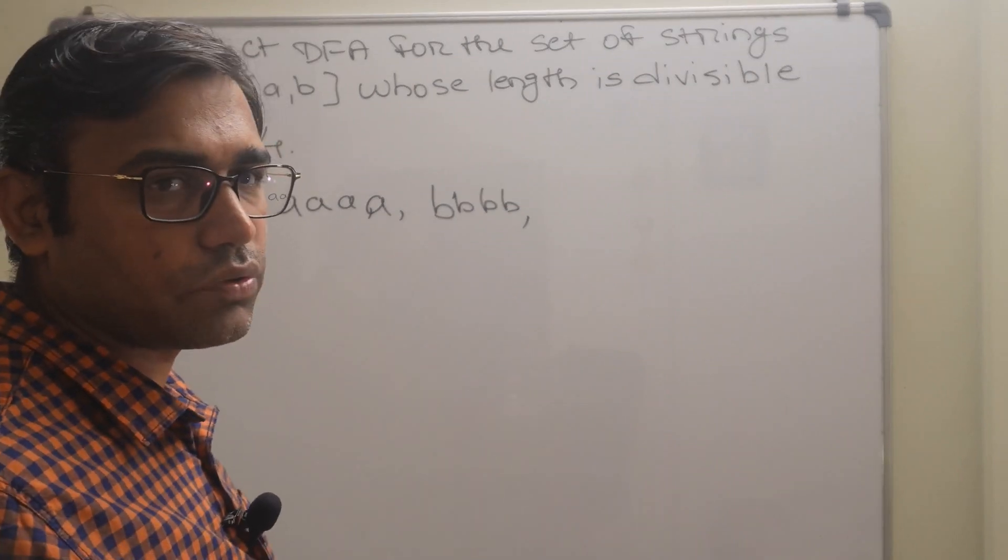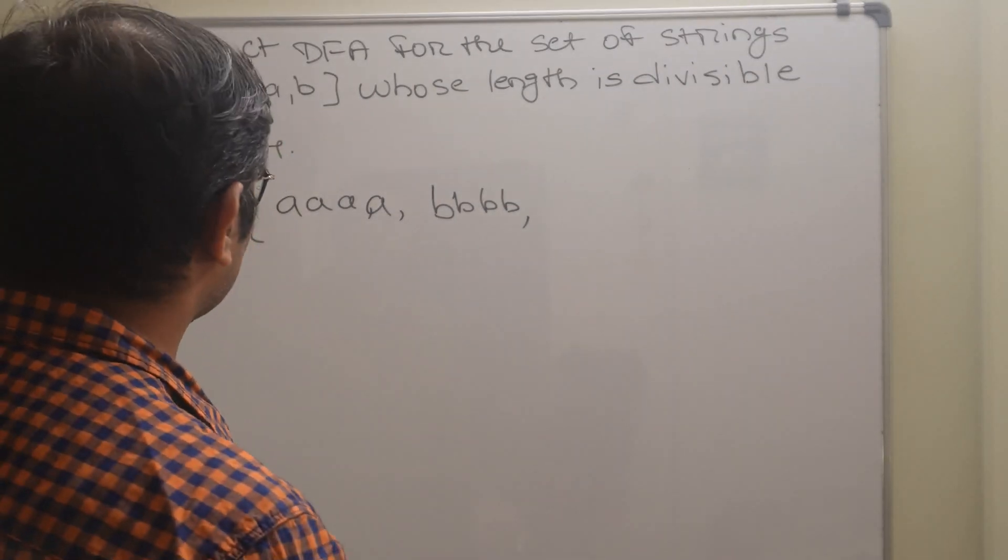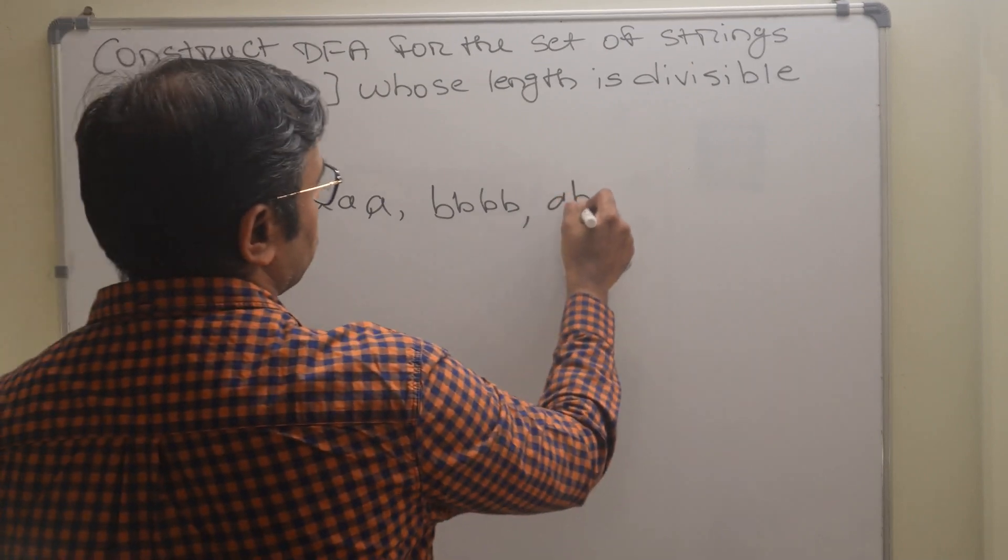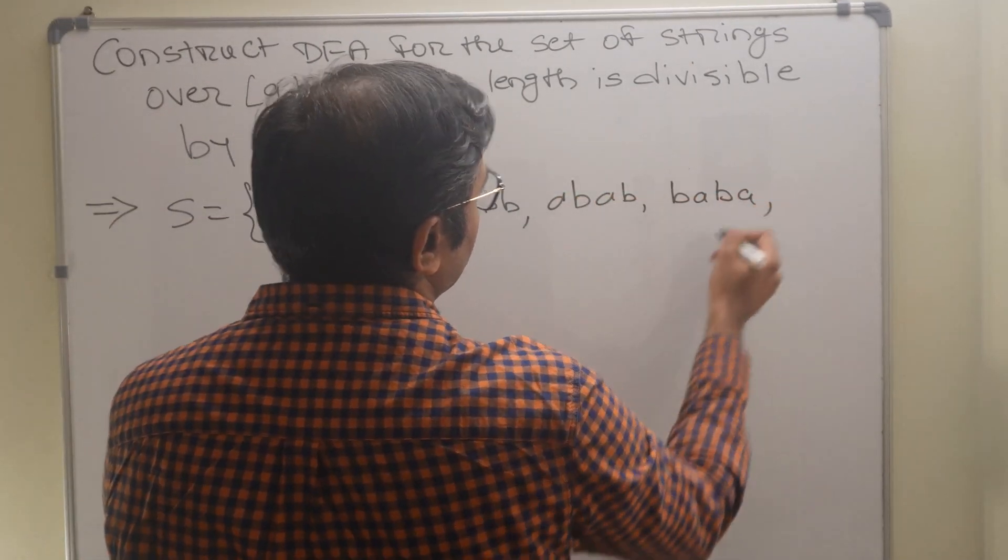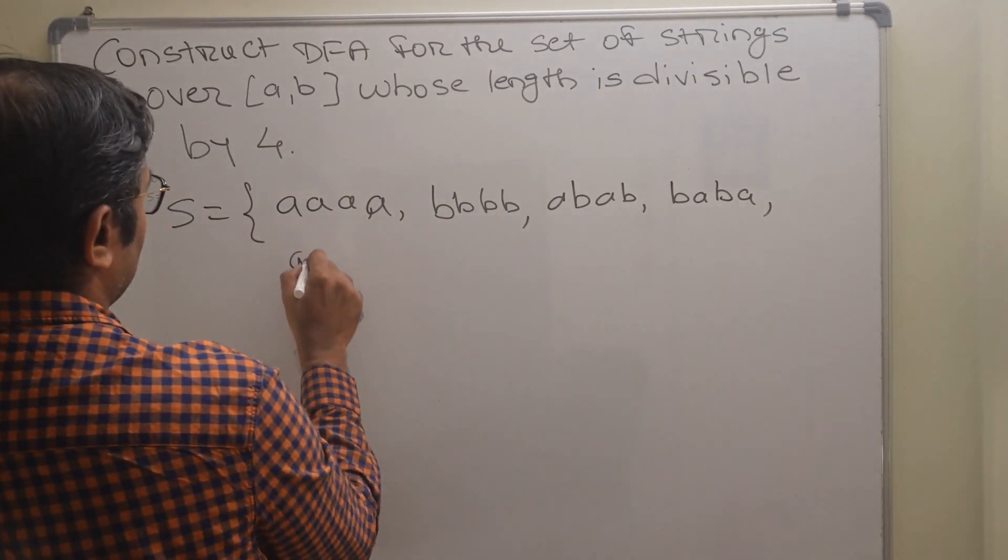It is not said that the string must start with a or b or end with a or b, it is up to us. Then I will write abab is valid, then baba is valid, then a triple b is also valid,